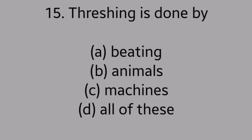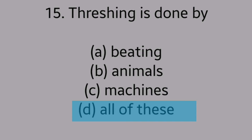Question number 15. Threshing is done by: option A. Beating, option B. Animals, option C. Machines, option D. All of these. Answer is option D. All of these.